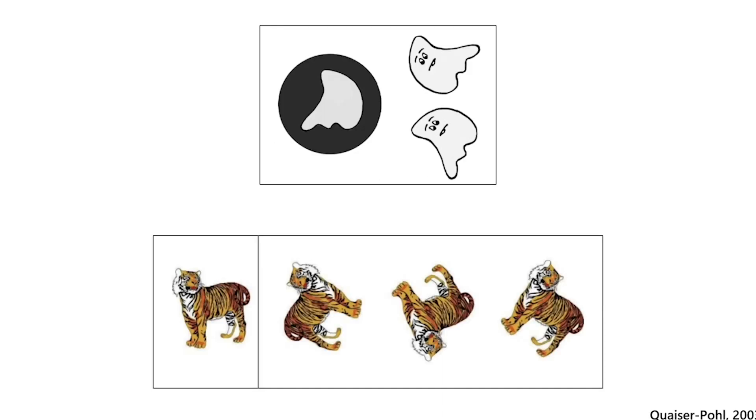And there's different variations of this task, including variations used for children, like this one. In this one, children have to pick which of the two ghosts fits in the hole. And there's also this variation where children have to pick which of the animals on the right matches the animal on the left. And while these are both mental rotation questions, you can see that there's some differences here.